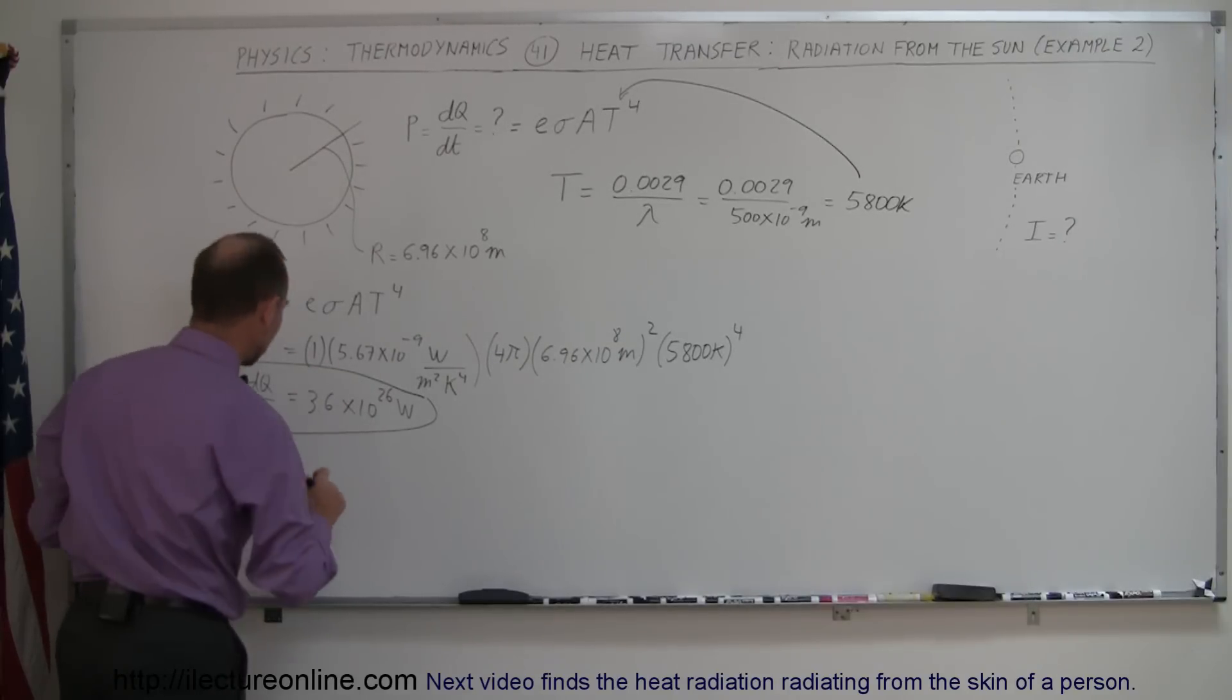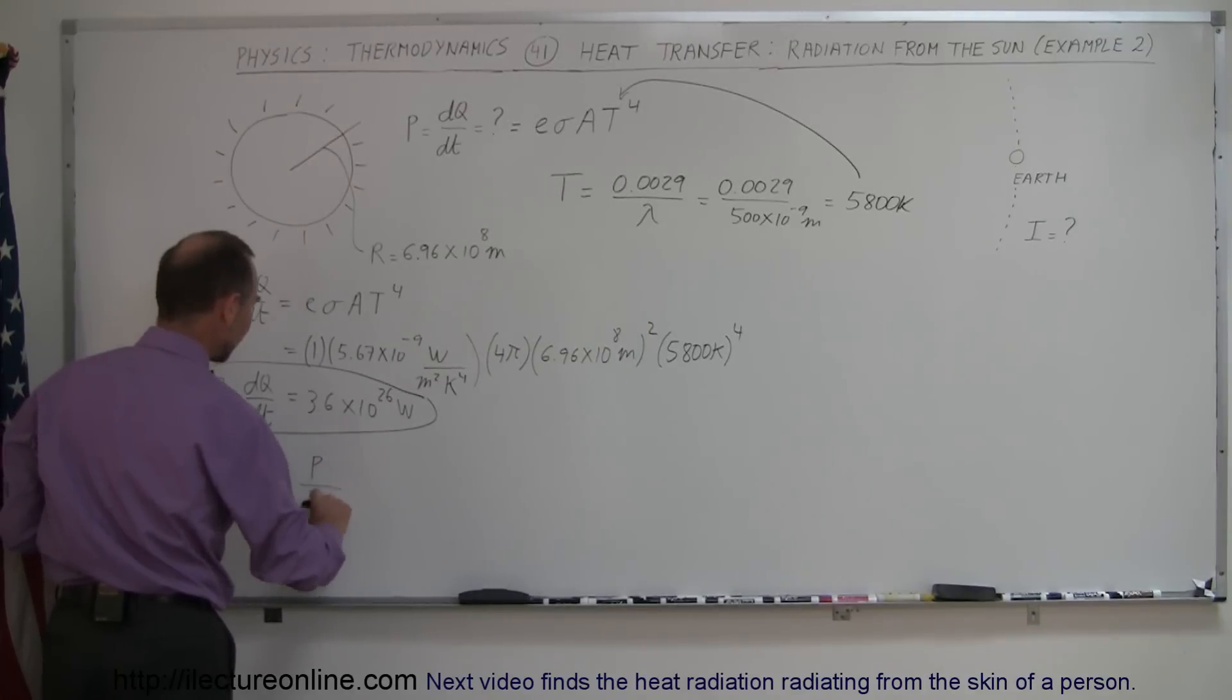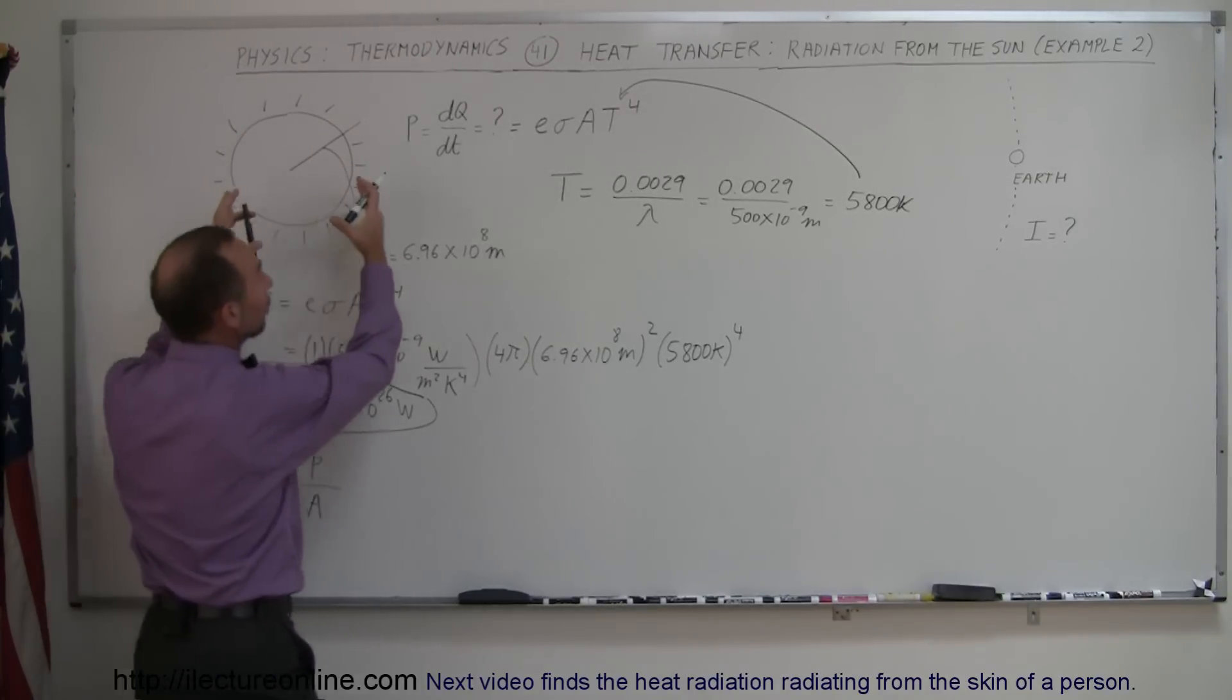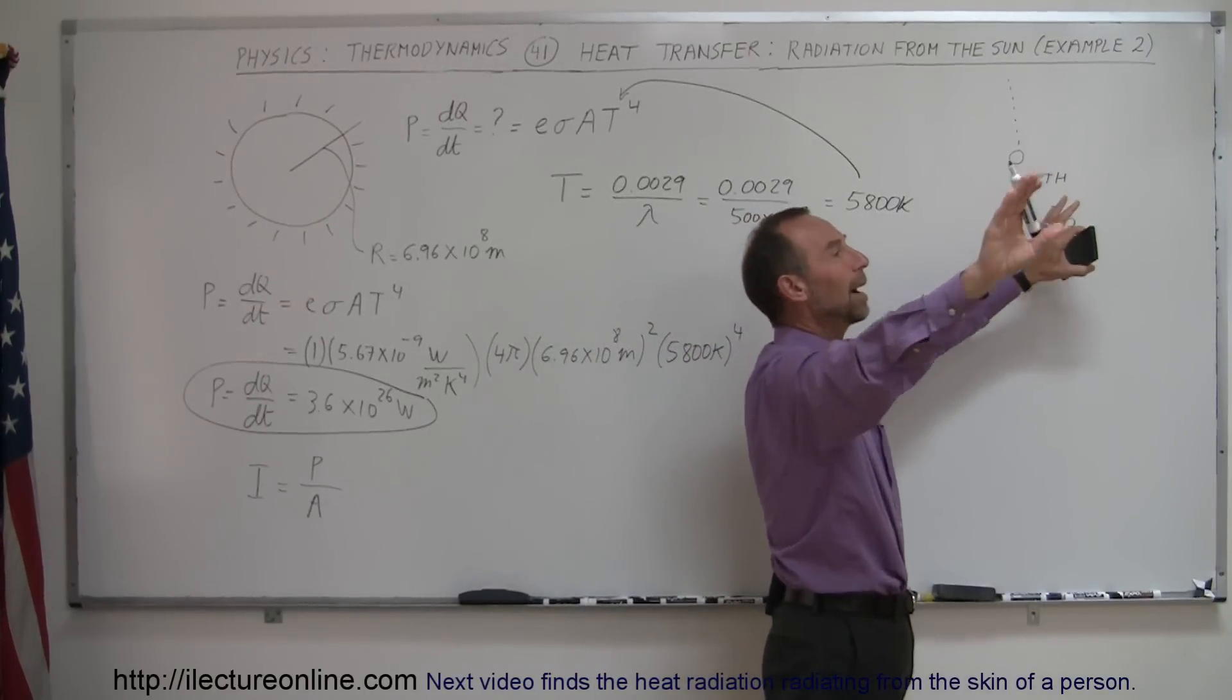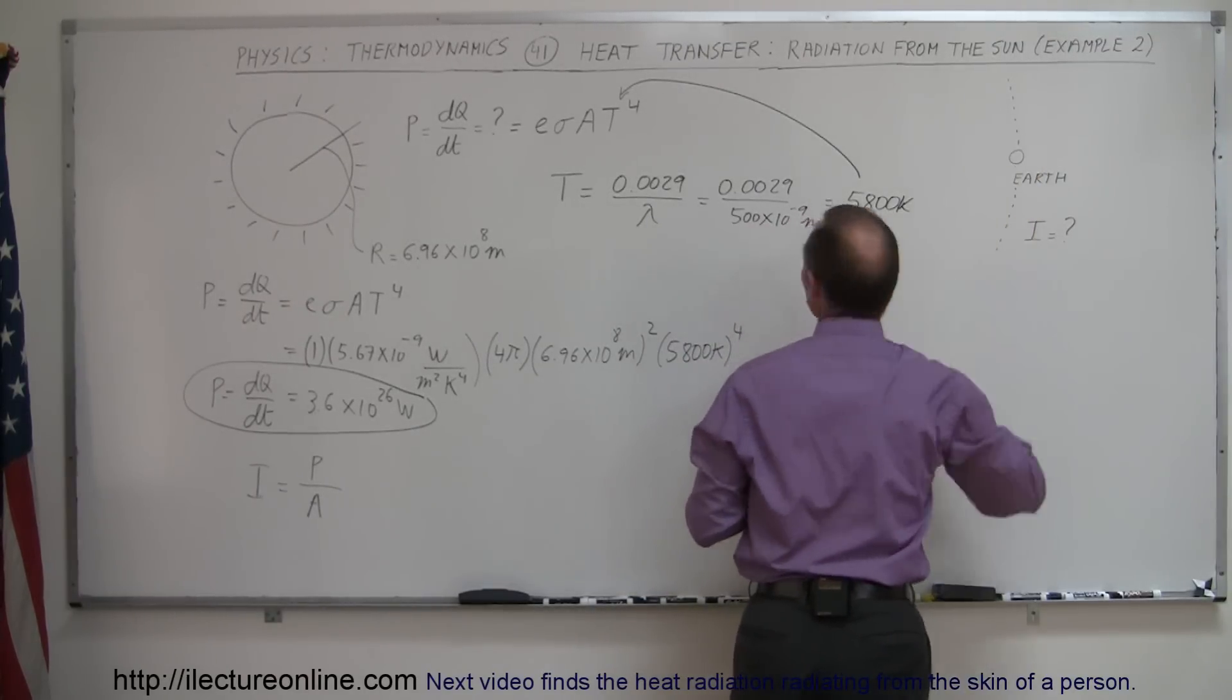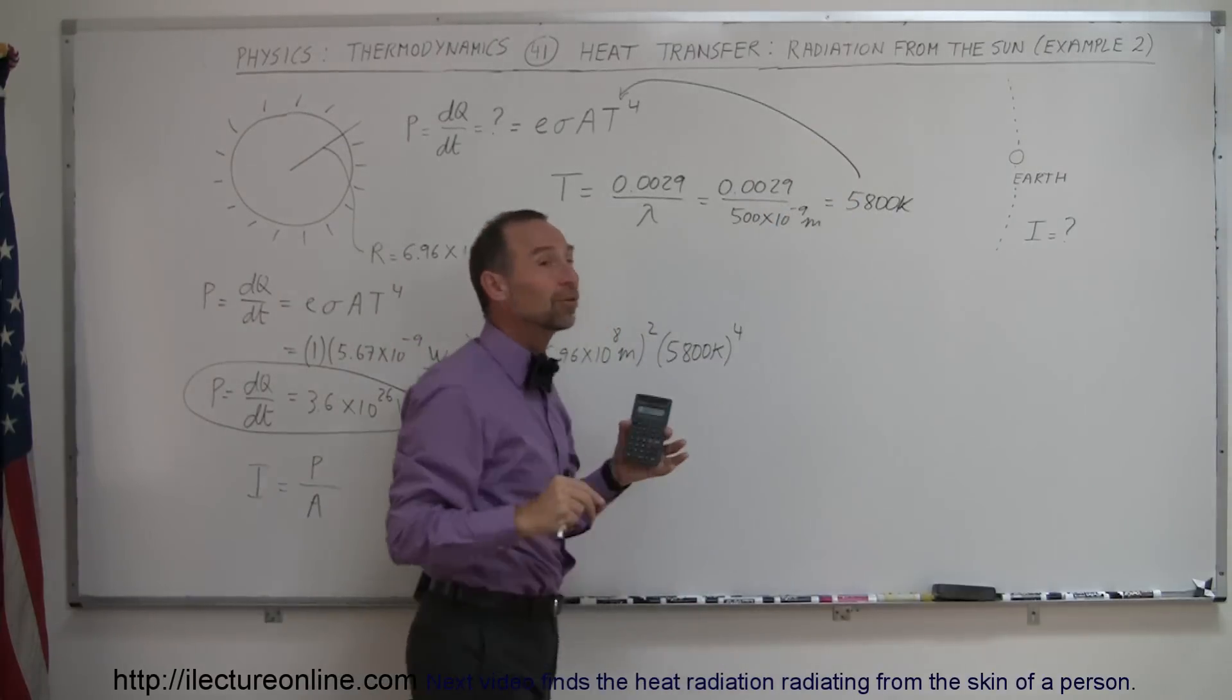So, the way to do that is to say that the intensity is equal to the power of the source divided by the surface area over which it spreads. Now, imagine the sun shining in all directions, including towards the Earth. And so, by the time it reaches the Earth, it's being diluted by shining over an area like a beach ball. Think of it as a huge beach ball where the Earth is at the edge of that beach ball. And the light is then illuminated all over the surface of the beach ball.